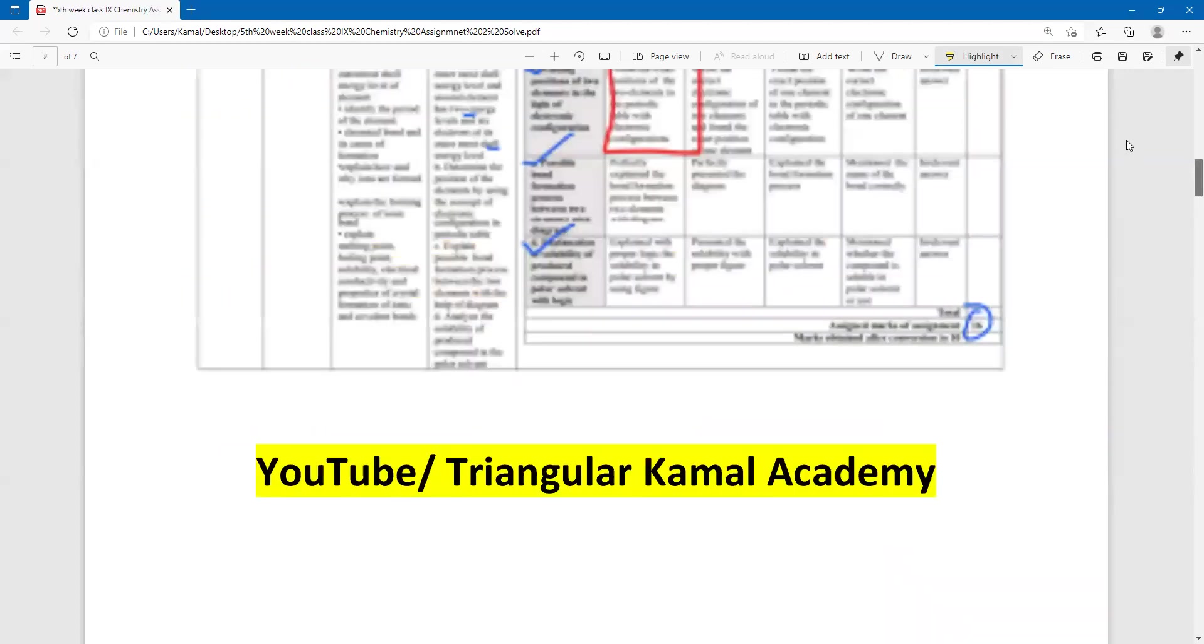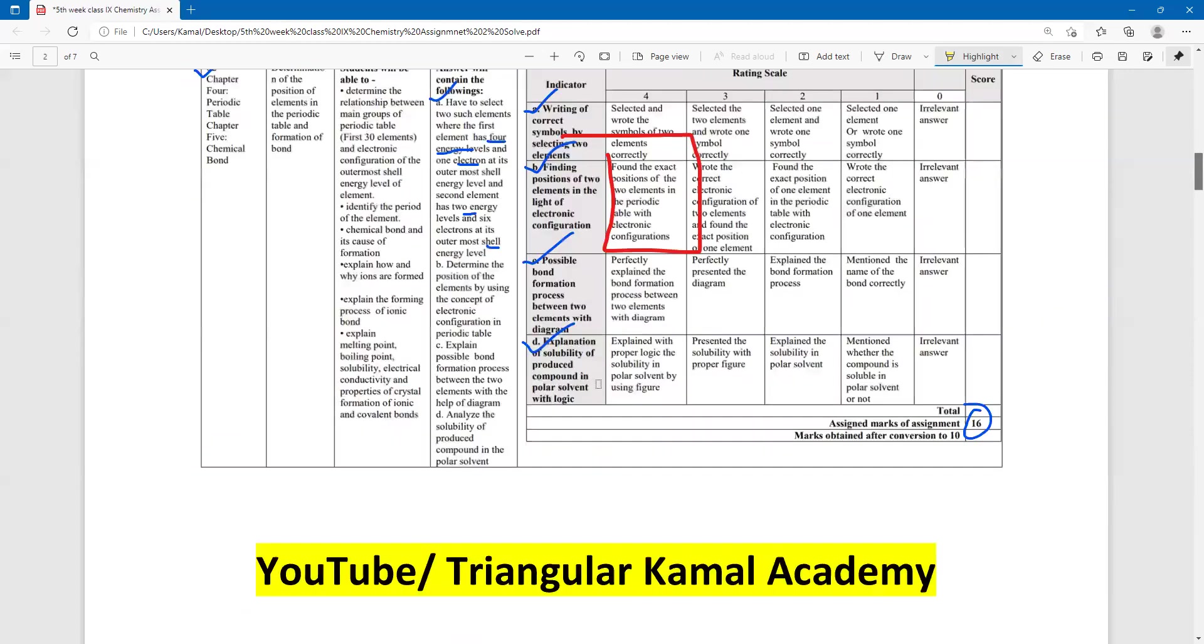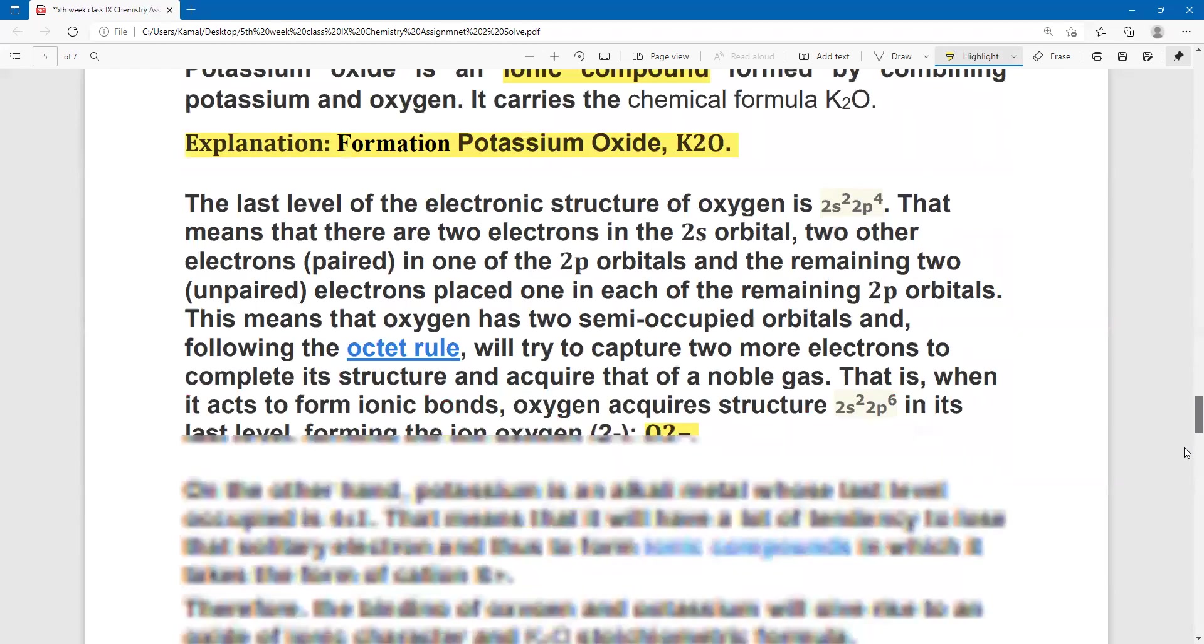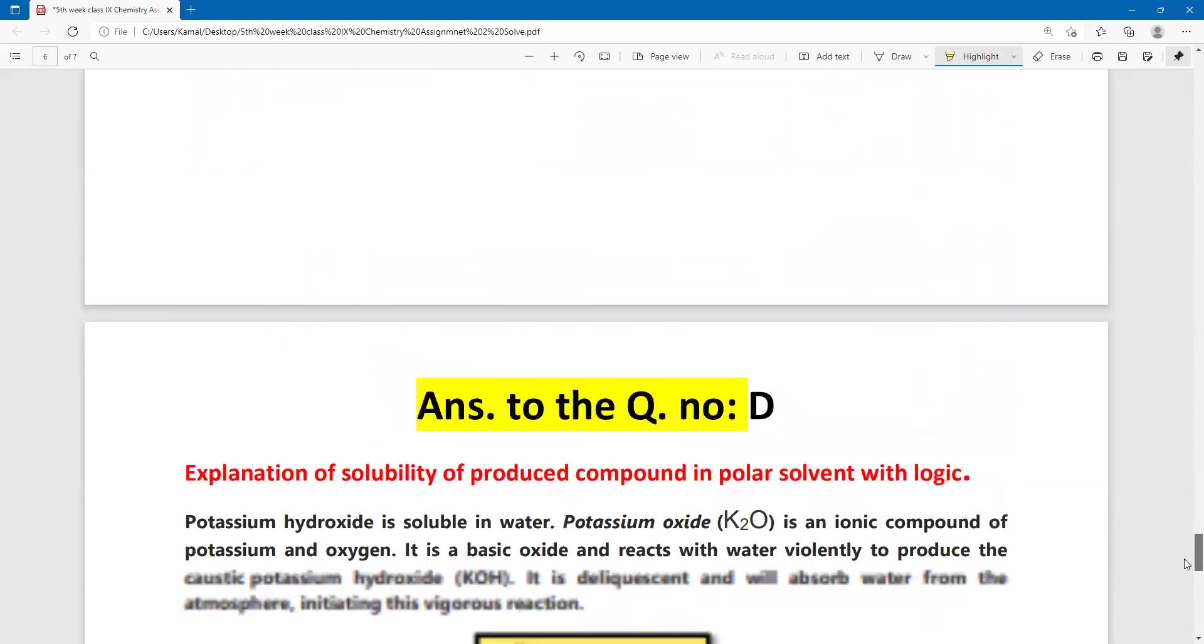The final question, question number D, explanation of solubility of produced compound in the polar solvent with the logic. The produced compound is potassium oxide and oxygen water mix, and it is soluble. The solubility I will explain with the polar solvent.